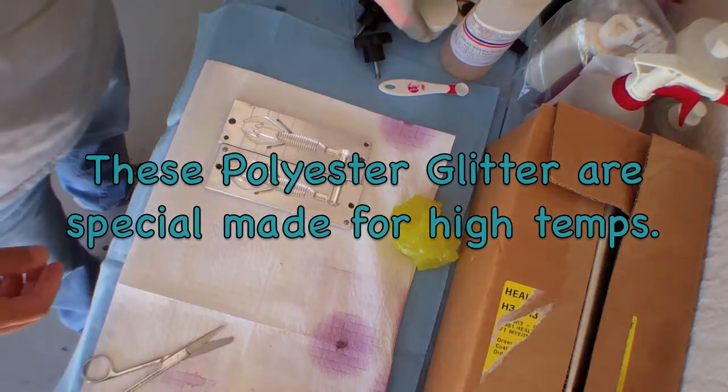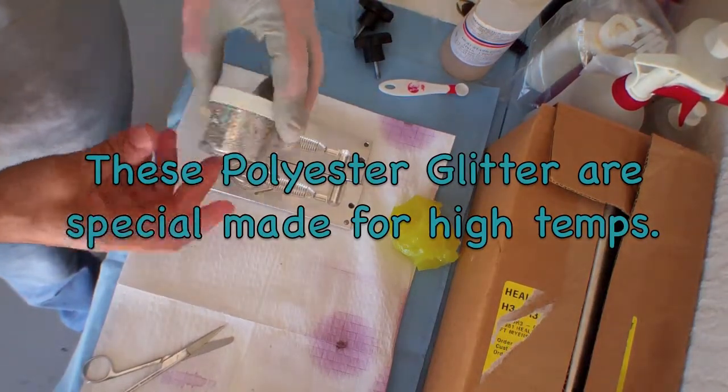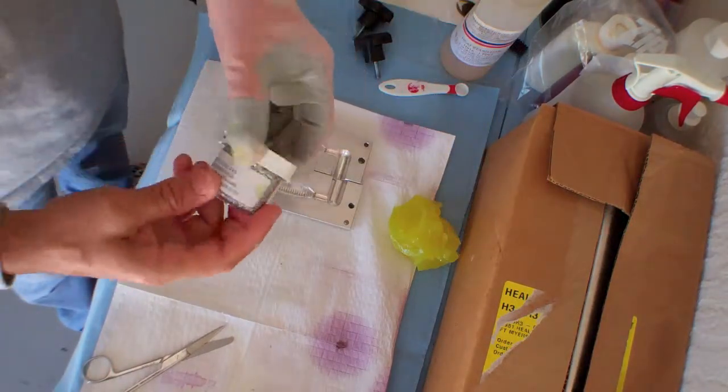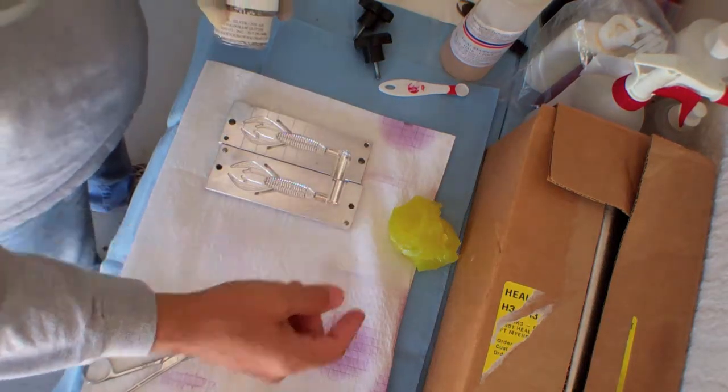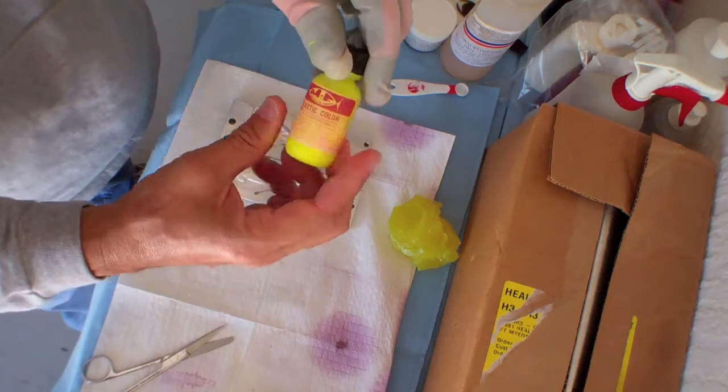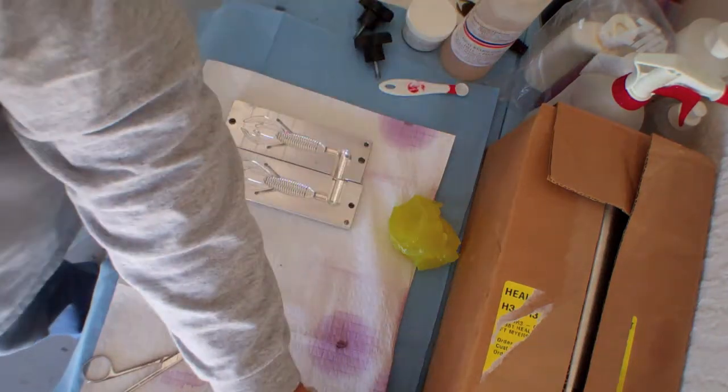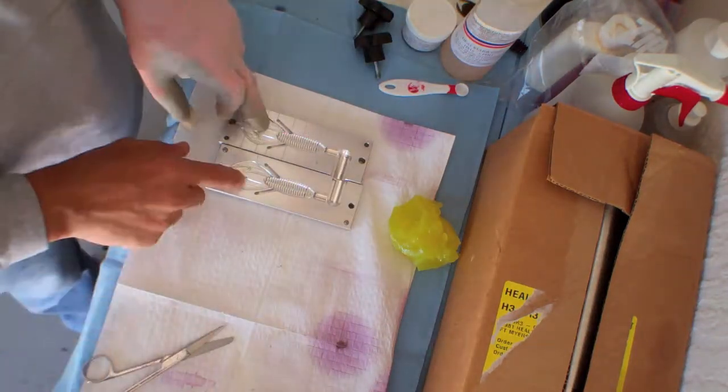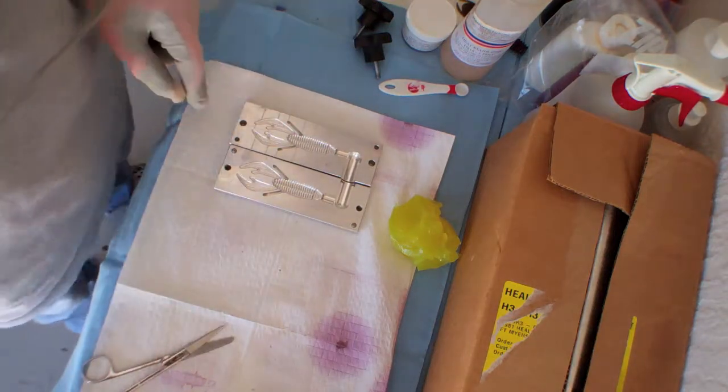Alright guys, I'm heating up the plastic. I added some glitter on it. I also had to add a little bit more color. This is the fluorescent chartreuse. And in a minute, I'll be pouring for the claws.